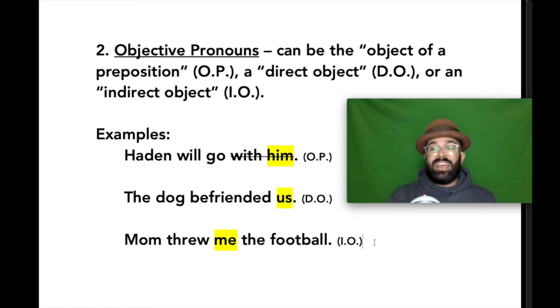The first one, Hayden will go with him. In this sentence, Hayden is the simple subject. Will go is a verb phrase. And we have a single prepositional phrase with him. Him is a pronoun substituting for some guy. Maybe it's Bexley with Bexley. But in this instance, we've used the pronoun him from the objective pronoun list. It is the object of the preposition with.